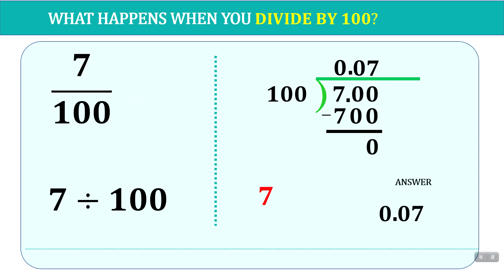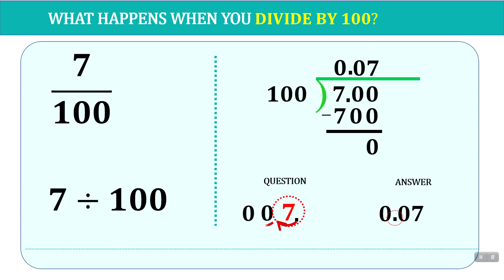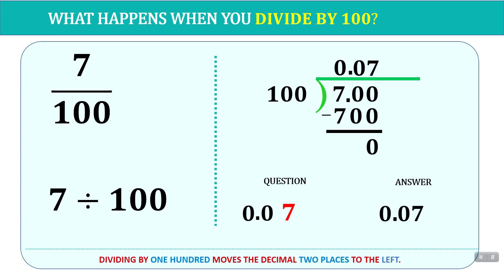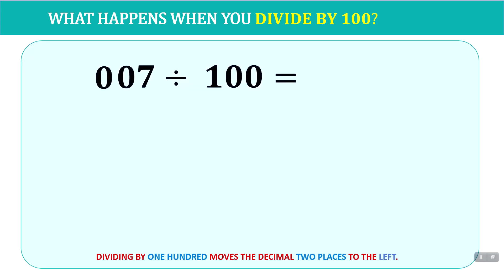Look at the question — 7 was in the question, and 7 is also in the answer, just in a different position. In the number 7, there's really a decimal point right after the 7. If we place zeros before the 7, we can see that in order to arrive at our answer where 7 is 2 spaces after the decimal point, we have to move once, twice. So dividing by 100 really means moving the decimal point 2 places to the left. 7 divided by 100 — move once, twice — gives us 0.07.